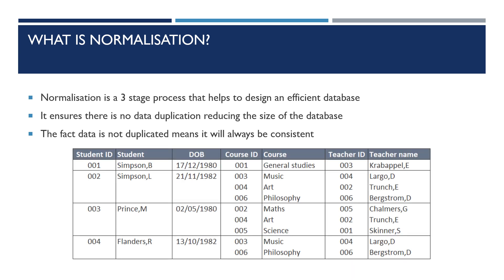Here we can see a database that's in zero normal form. In this database, courses and teacher names are both written in repeatedly. This takes up extra room and each time it's done presents a chance for it to be mistyped, so that there is some data inconsistency.